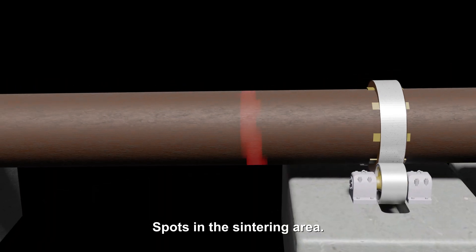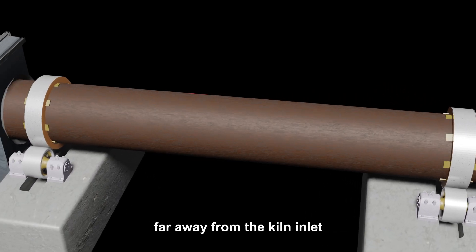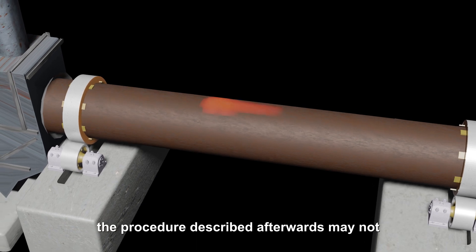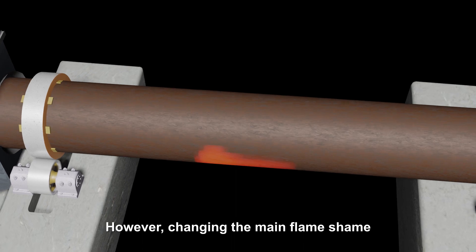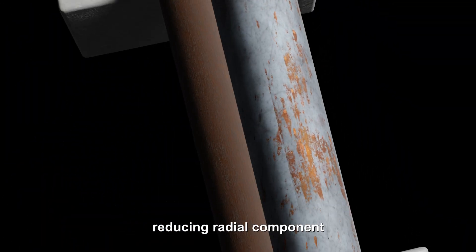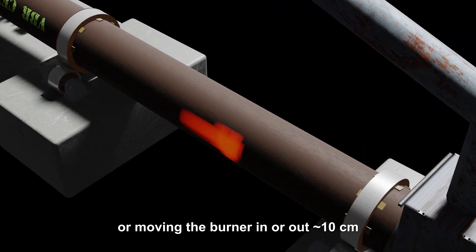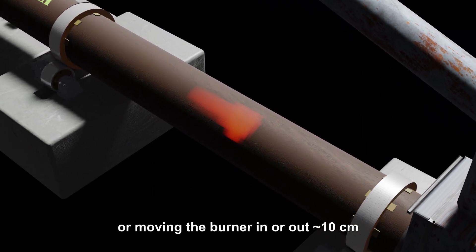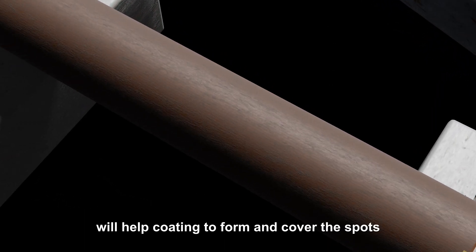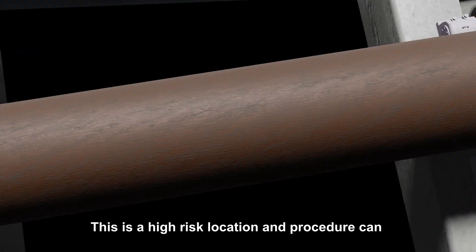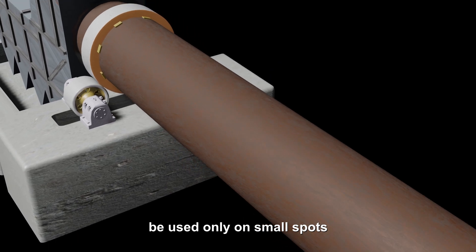Spots in the sintering zone: because of the higher thermal load and being far away from the kiln inlet, the procedure described afterwards may not cover the spots. However, changing the main flame shape, reducing radial component, or moving the burner in or out 10 centimeters depending on spot location, will help coating to form and cover the spots. This is a high risk location and procedure can be used only on small spots.